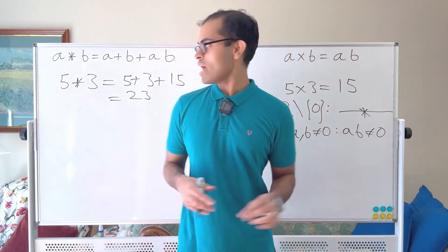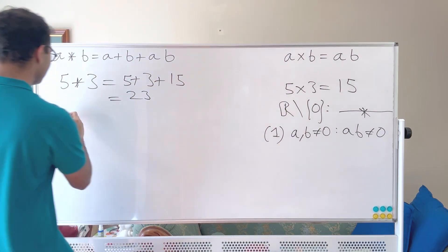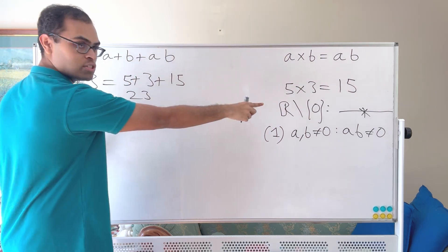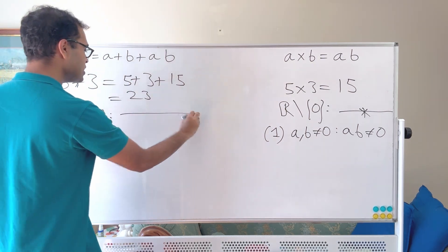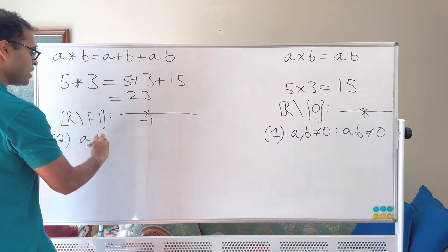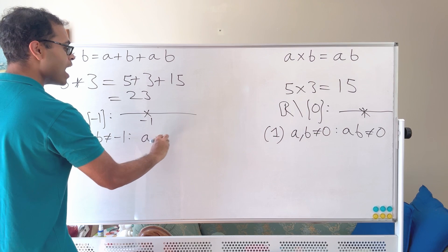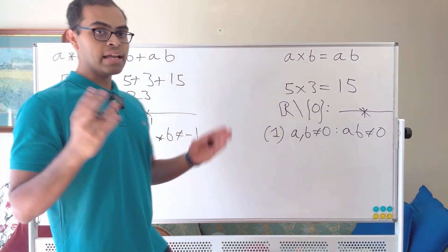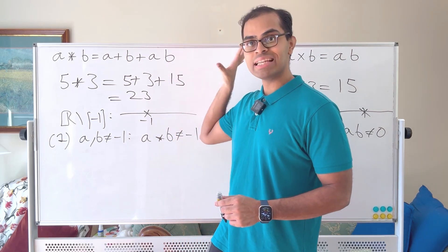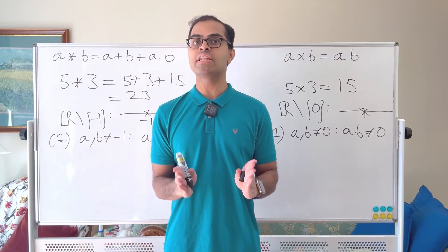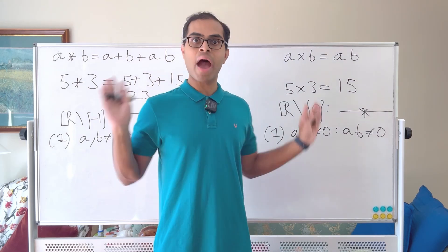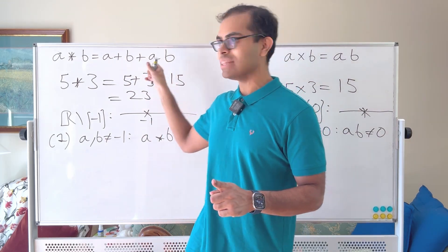Similarly, for this operation ★, if you delete −1 from the number line, it also satisfies closure: if a and b are not equal to −1, then a ★ b is not equal to −1. This is something I encourage you to check while watching. I have a companion video that studies this operation in depth, where you can verify these properties. For now, I'm just going to show you the parallels before explaining why these two are the same.